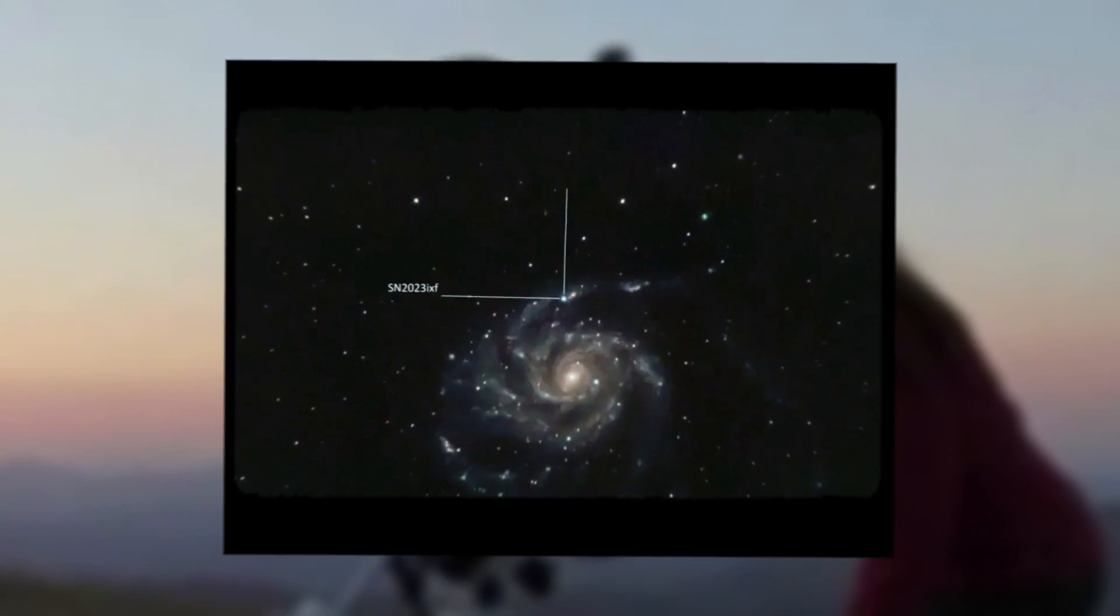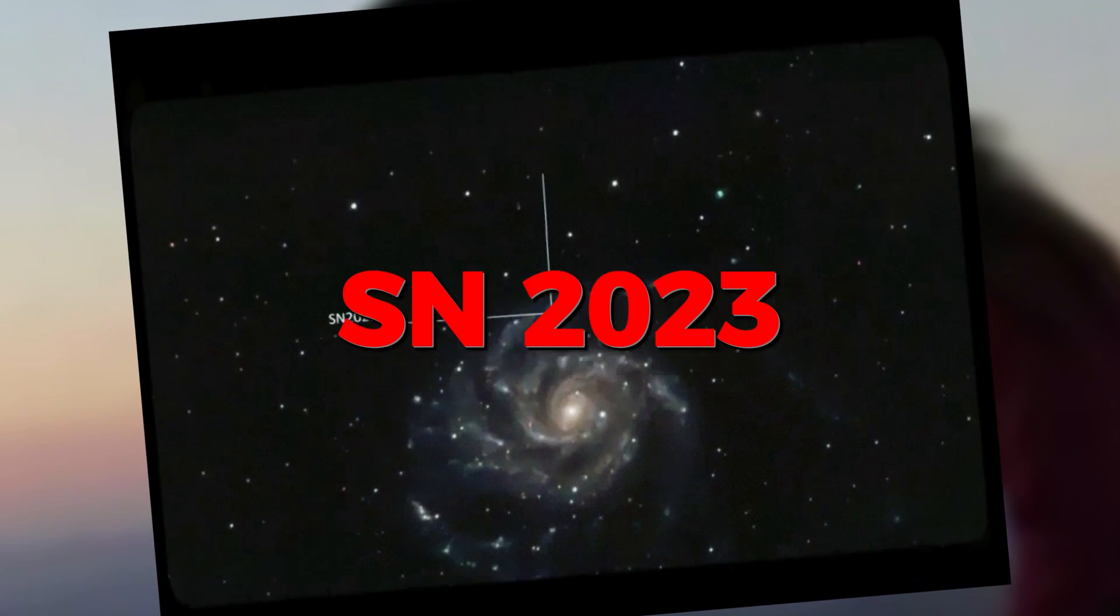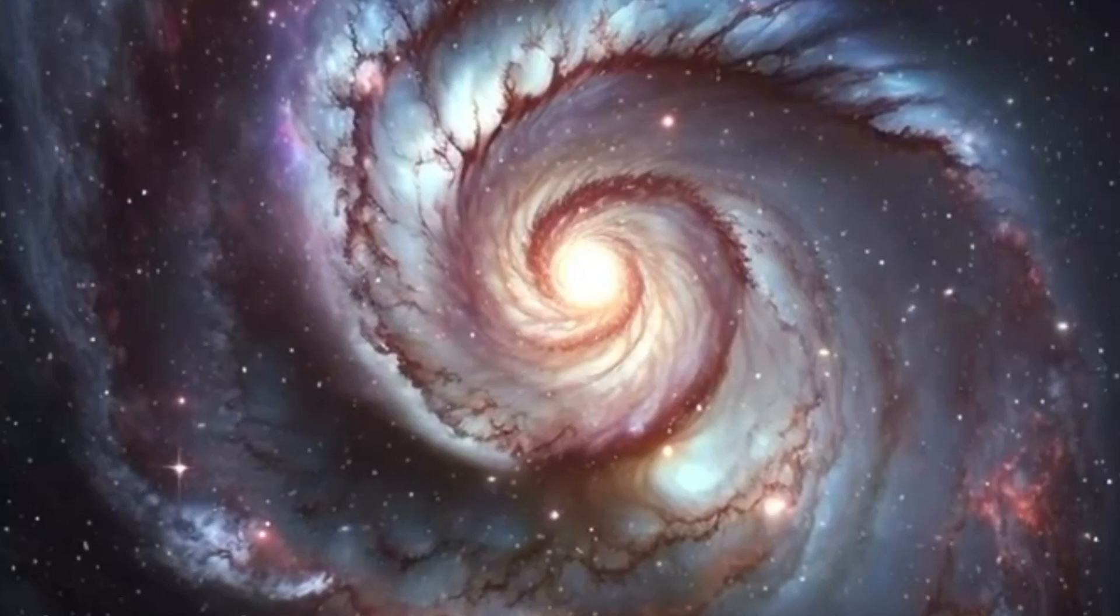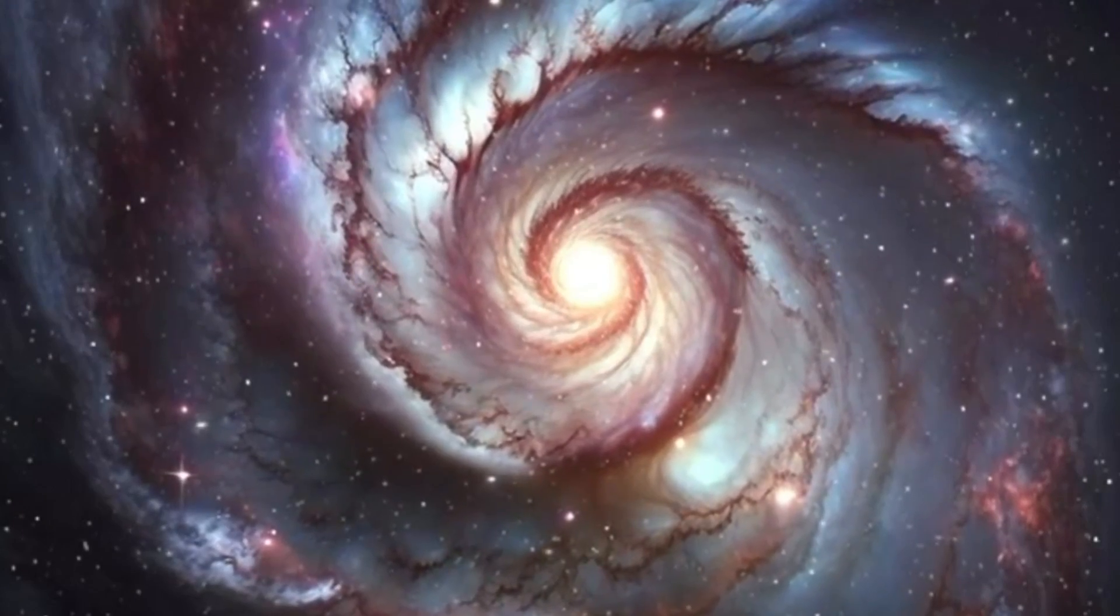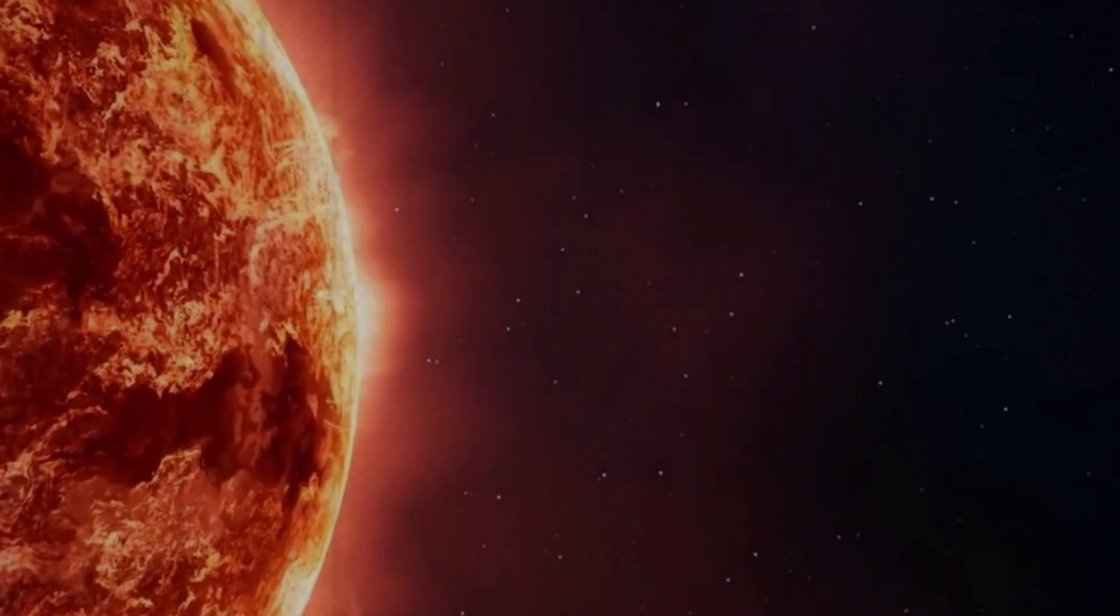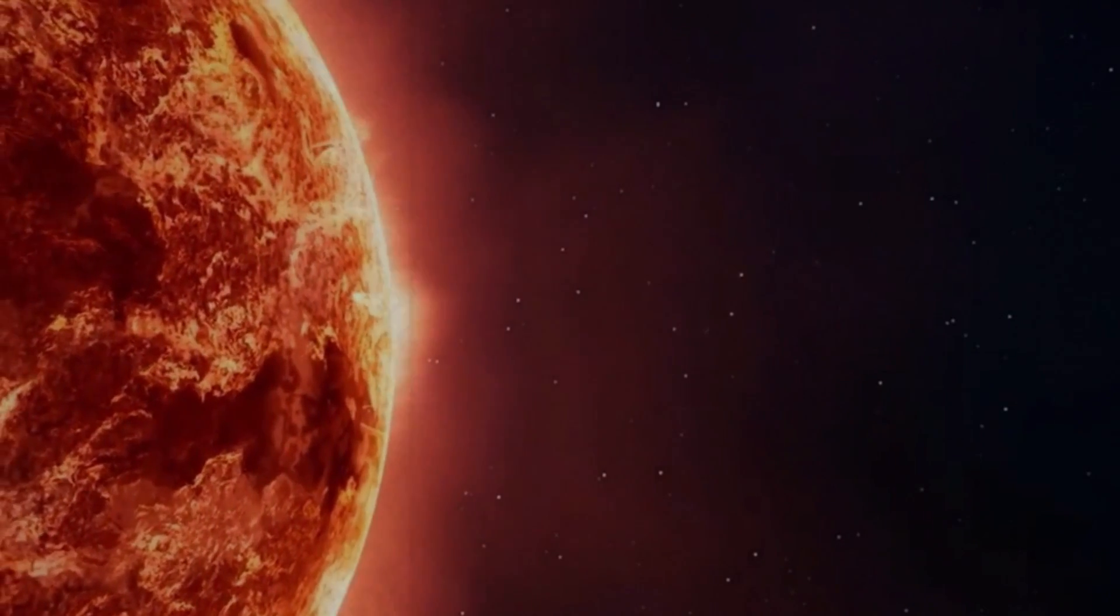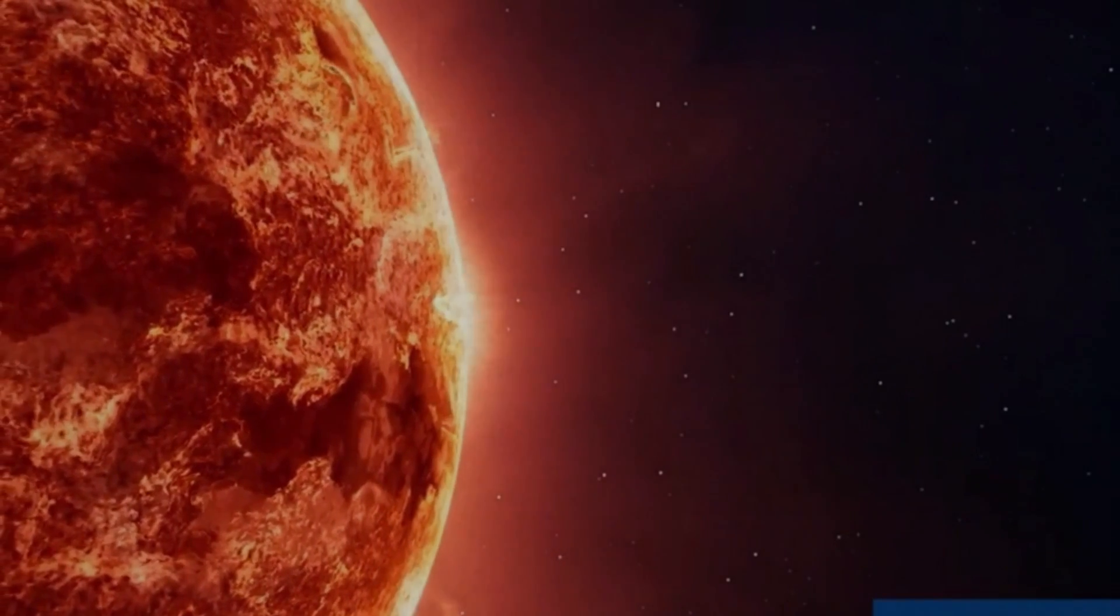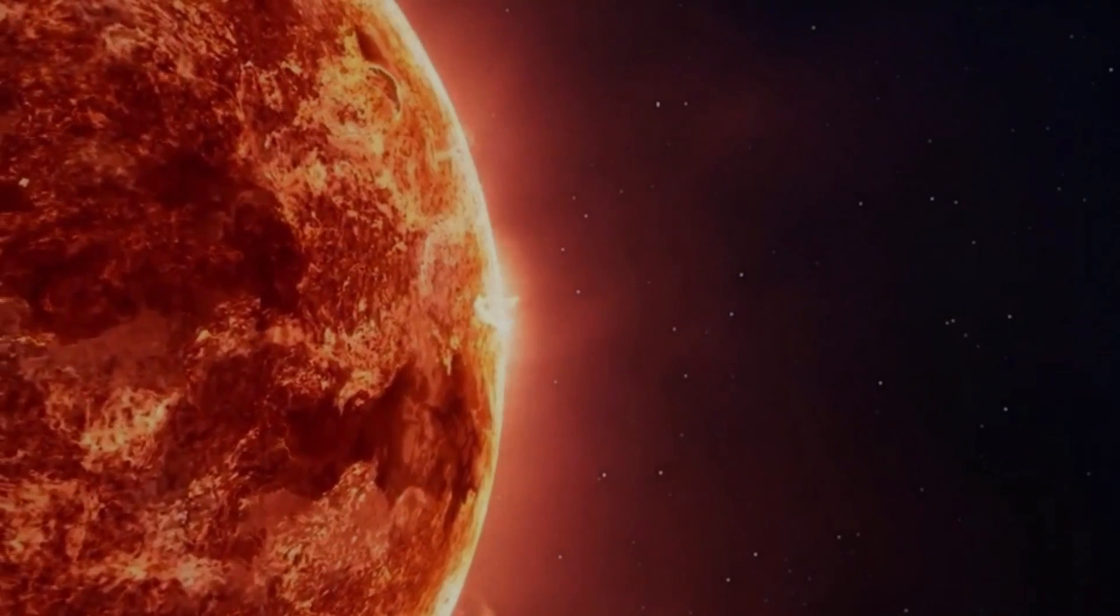As stars use up their hydrogen, they go through changes, finding new energy sources. Take Betelgeuse, for example. When its hydrogen runs low, it starts burning helium, forming carbon and oxygen. This shift from the main sequence to the helium burning phase makes the star expand into a red giant. As helium decreases, the star expands more and goes through different burning phases. Bigger stars go through these transitions faster due to intense gravitational pressures.